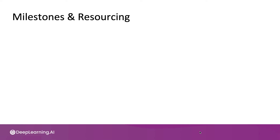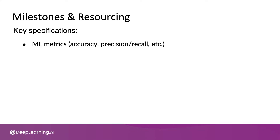Determining milestones and resourcing involves writing out the key specifications for your project. This will include machine learning metrics such as accuracy or precision recall. For some applications, this may also include fairness types of metrics.